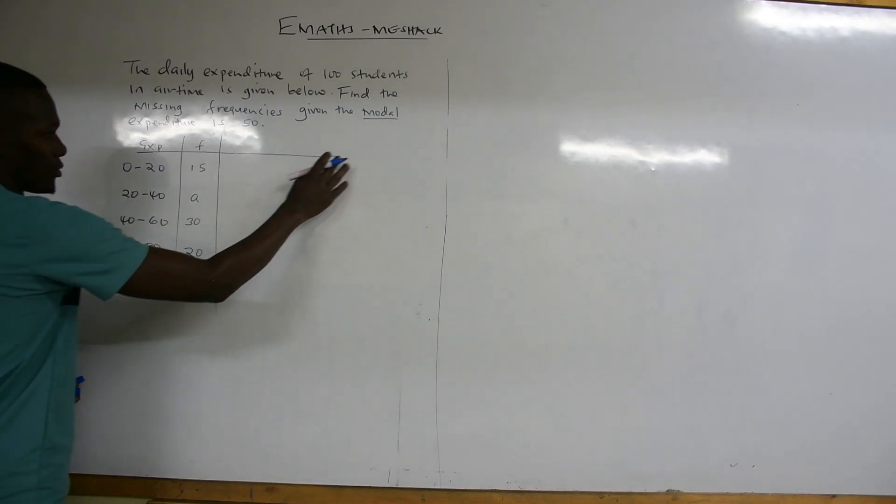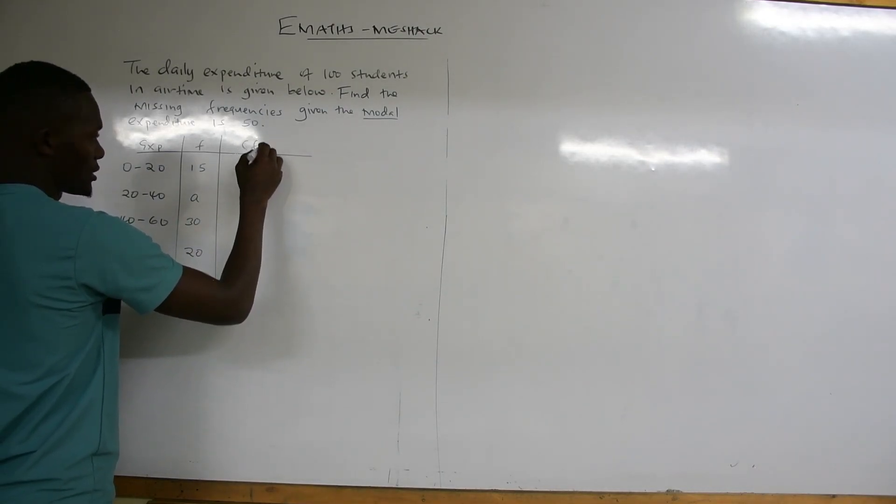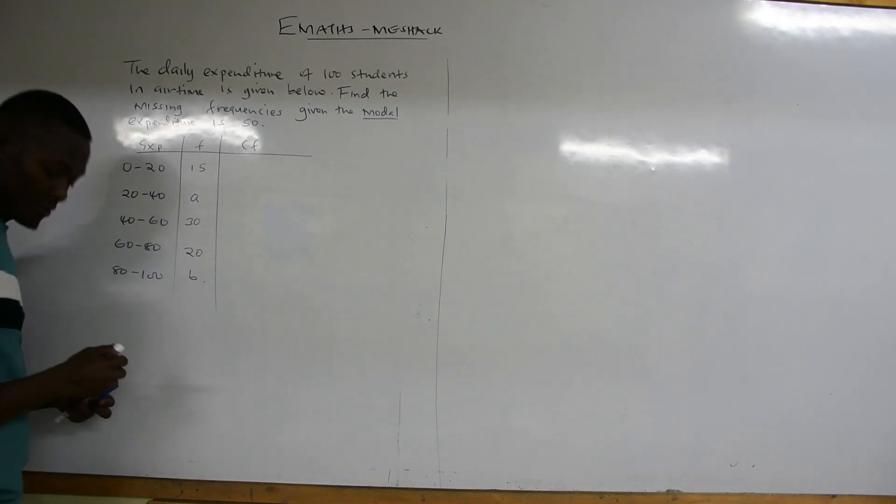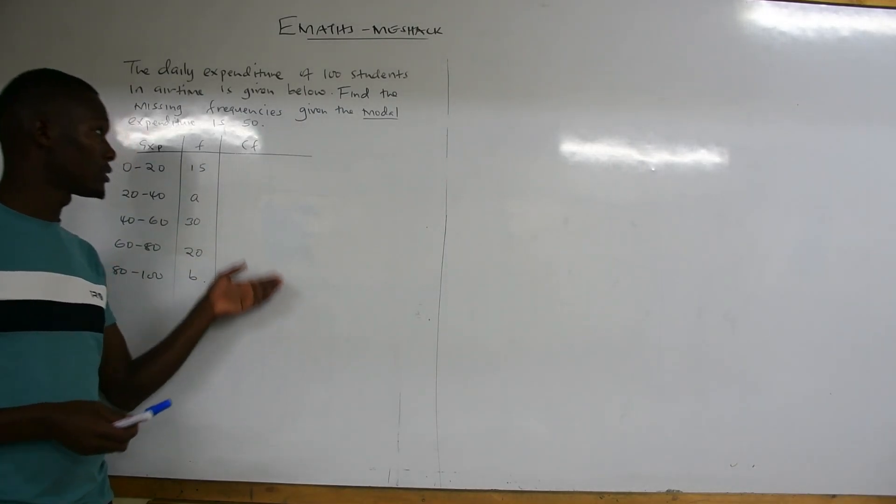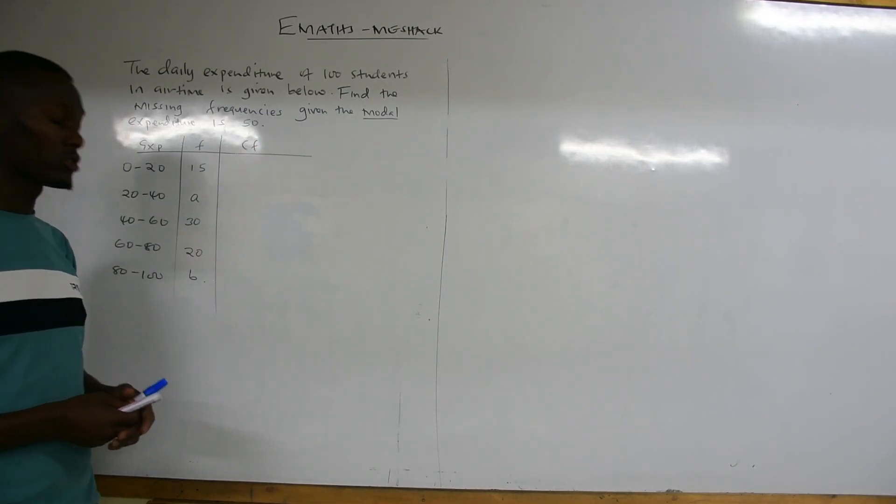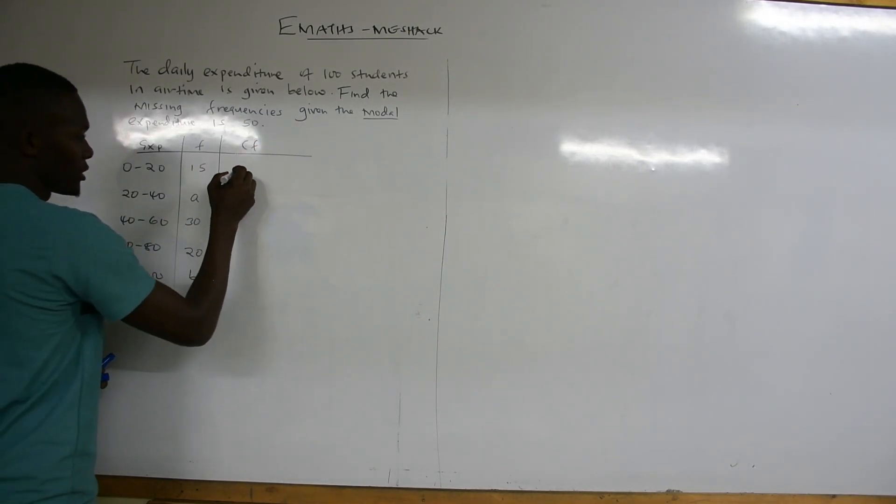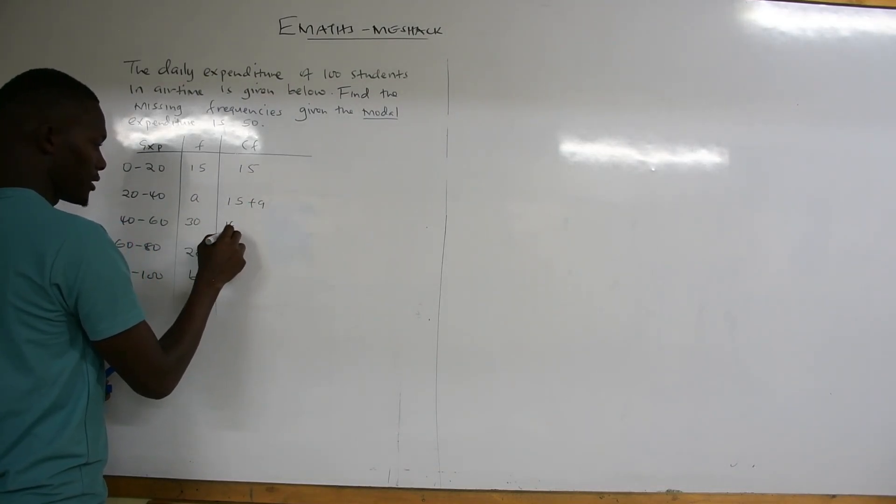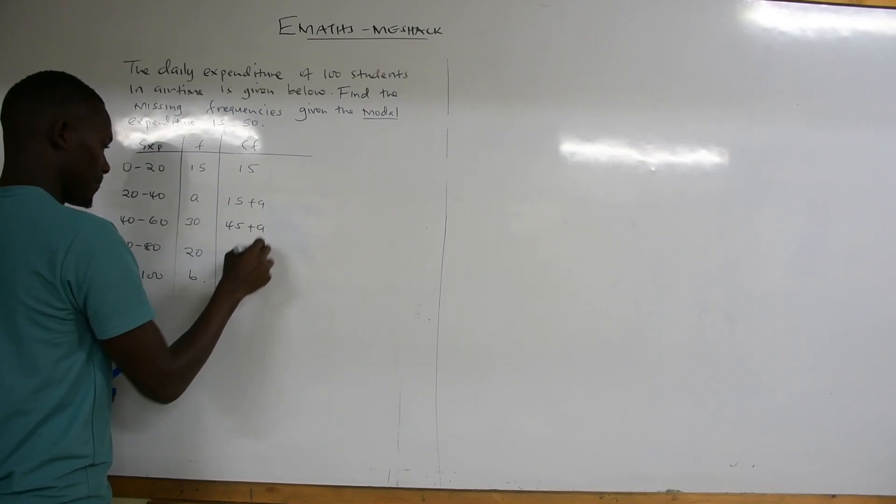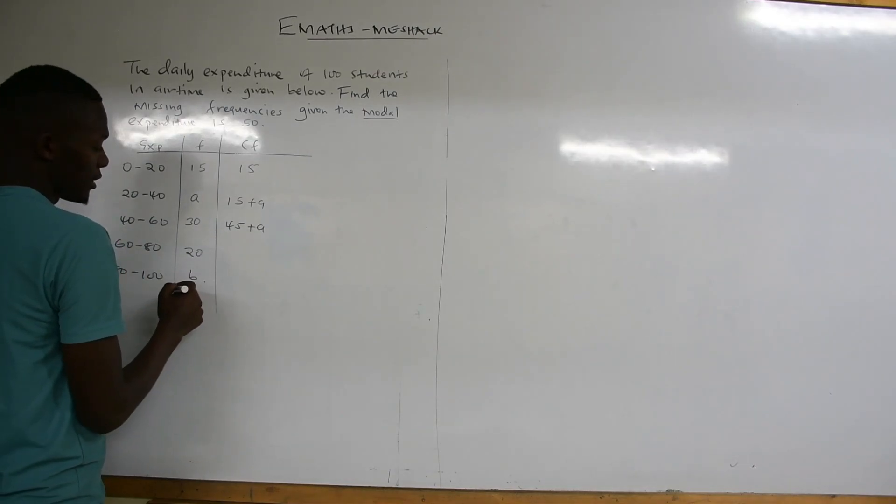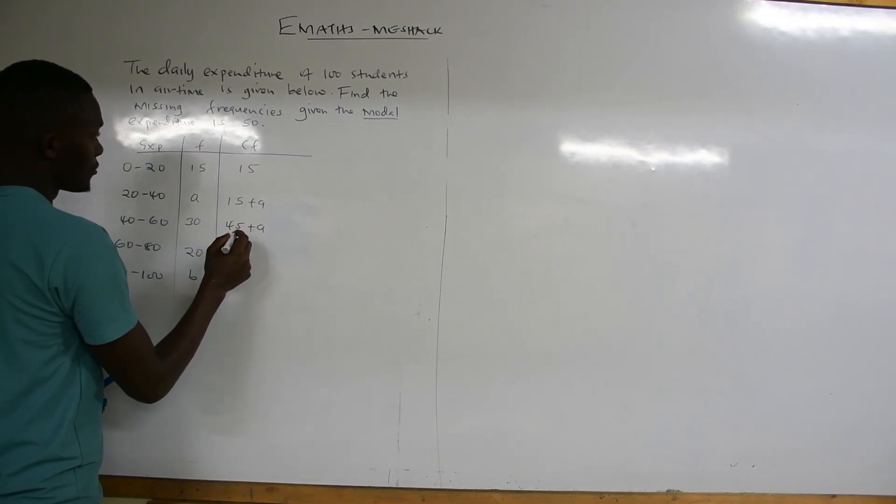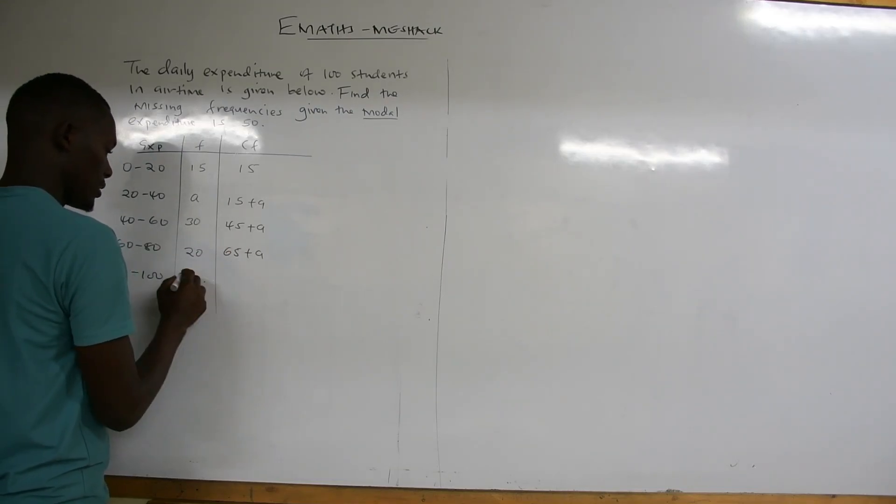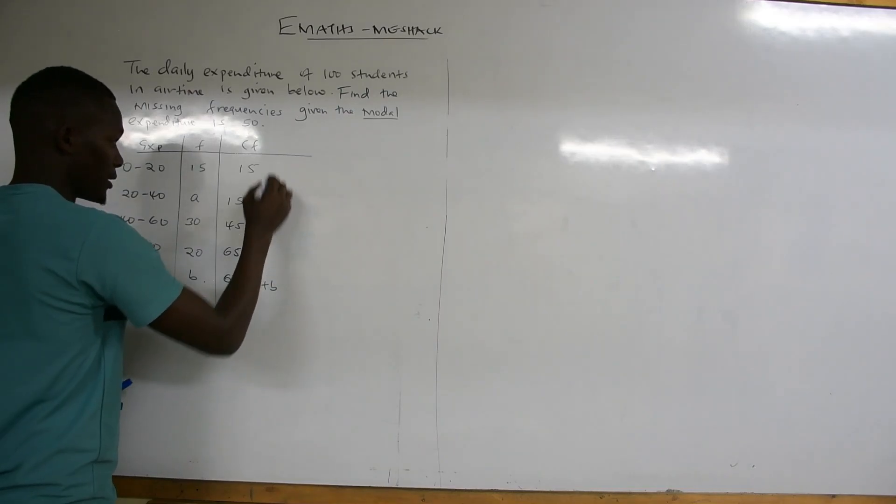We need a cumulative frequency. Our CF is the cumulative frequencies going downwards. We know the total should be 50. So we shall have 15, then 15 plus A, then 15 plus 30 equals 45 plus A, then 45 plus 20 gives us 65 plus A, and finally 65 plus A plus B.